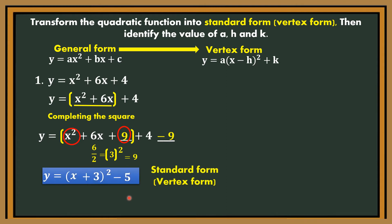So when read, y is equal to the quantity of x plus 3, quantity squared, minus 5. This is now the vertex form or standard form. We can now get the value of a, h, and k. The value of a is positive 1 — there is automatically a 1 there. The value of h is negative 3. It always changes — if it is positive here, we make it negative; if it is negative here, it becomes positive. Always the opposite sign. The value of k — carry the sign — that is negative 5.